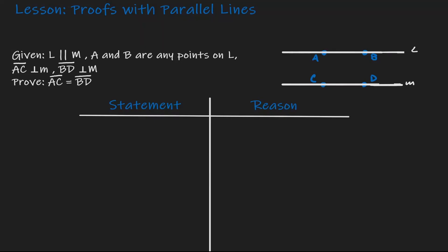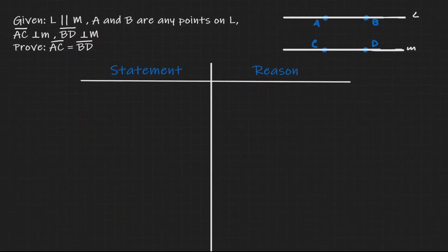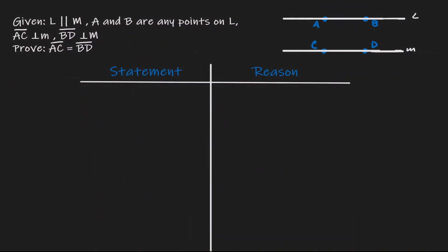Welcome. Today we'll take a look at some proofs with parallel lines. Let's start by looking at our first proof. Here we are given that we have two lines, line L and M, and we know that they are parallel to begin with.